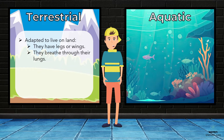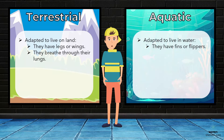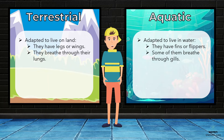Aquatic animals, on the other hand, have adapted to live in water. They have fins or flippers to swim, and some of them breathe through gills.